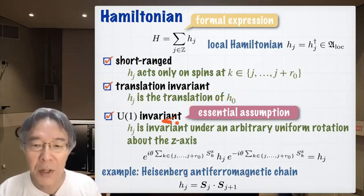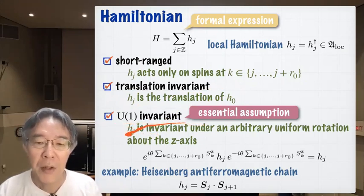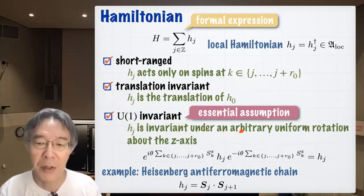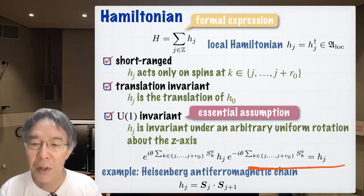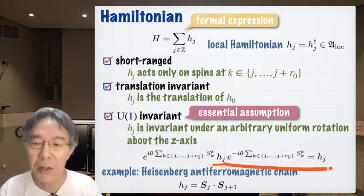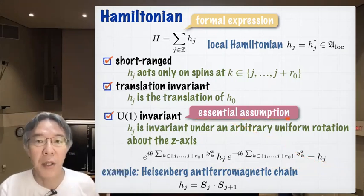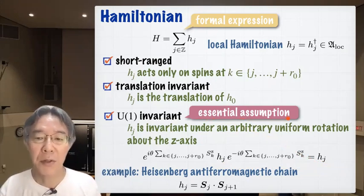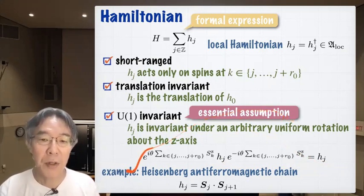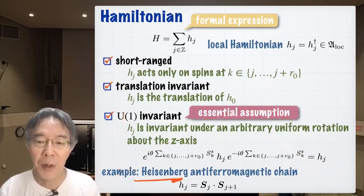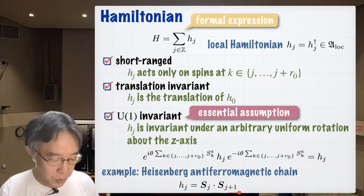In many theorems I prove here, I do not assume translation invariance, but I make this assumption for simplicity in this talk. And this is an essential assumption: I assume H_j is U(1) invariant, meaning it is invariant under any uniform rotation about the z-axis. There are many quantum spin systems which are not U(1) invariant, so this is an essential assumption. A typical example is the Heisenberg antiferromagnetic chain.